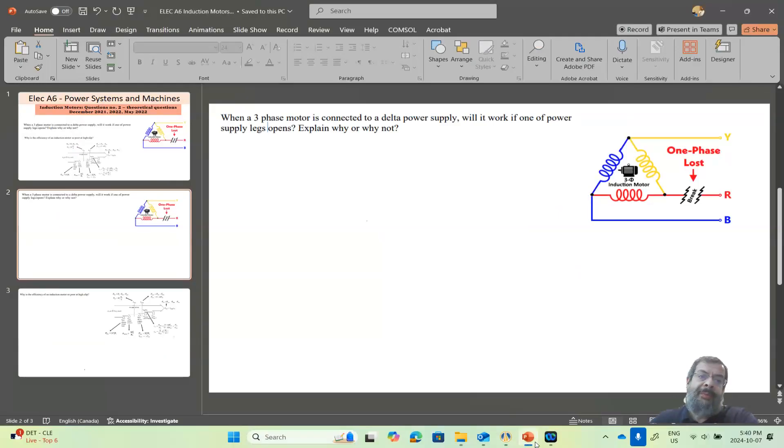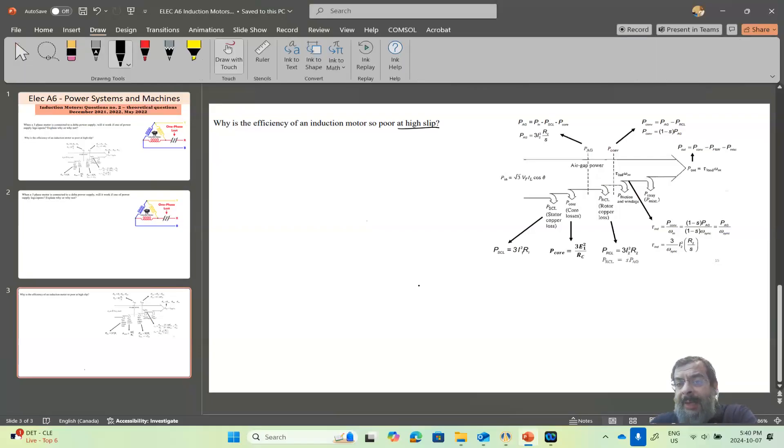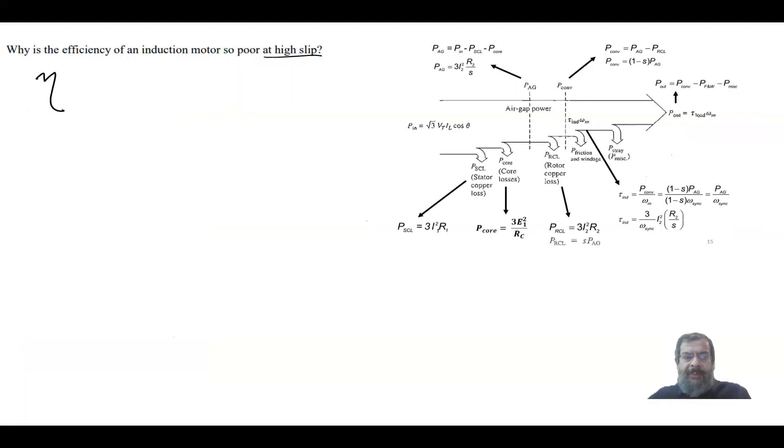Then we have the second question which says: why is the efficiency of an induction motor so poor at high slip? The efficiency is equal to P_out over P_in. Now the P_out is equal to...